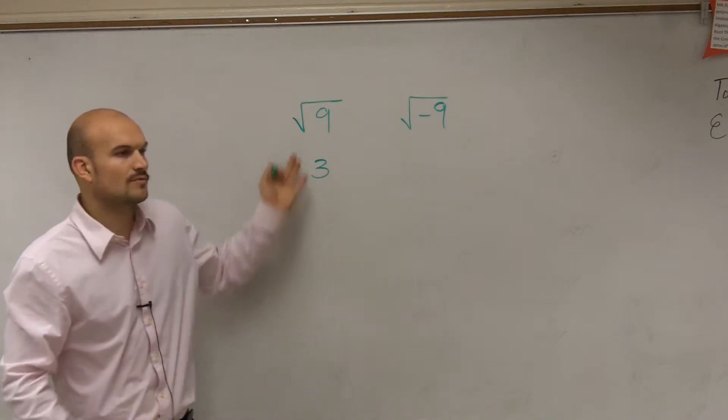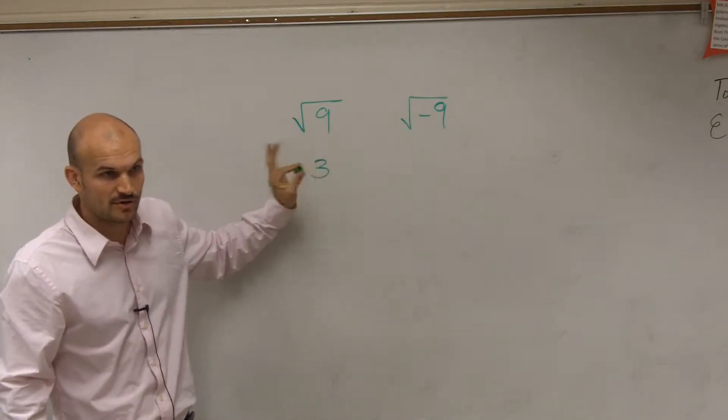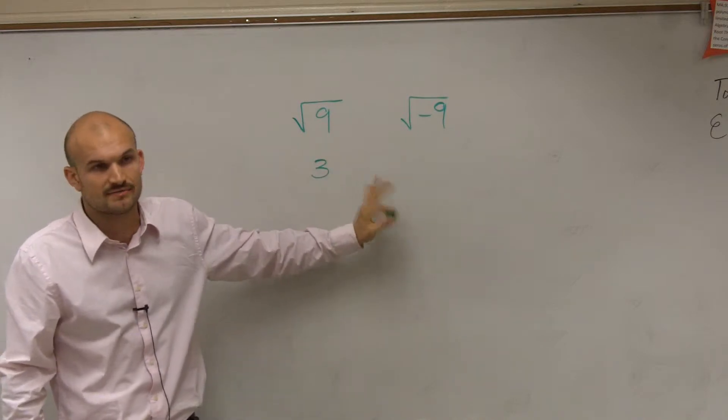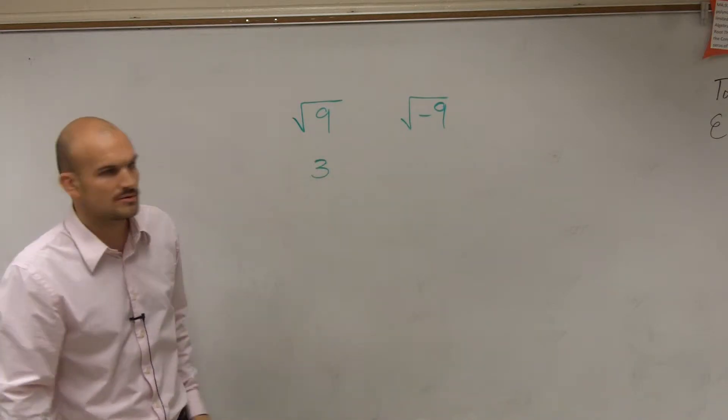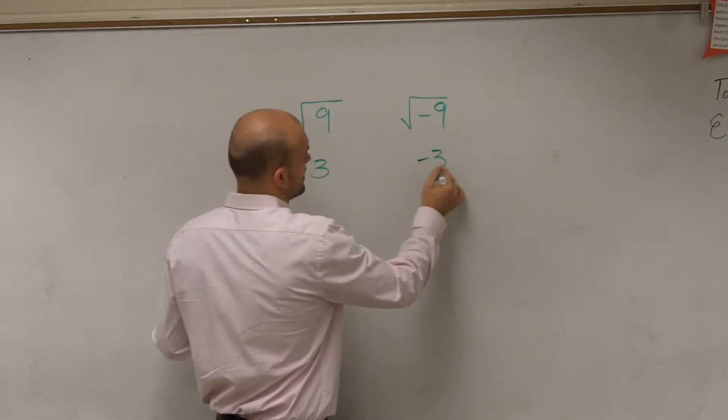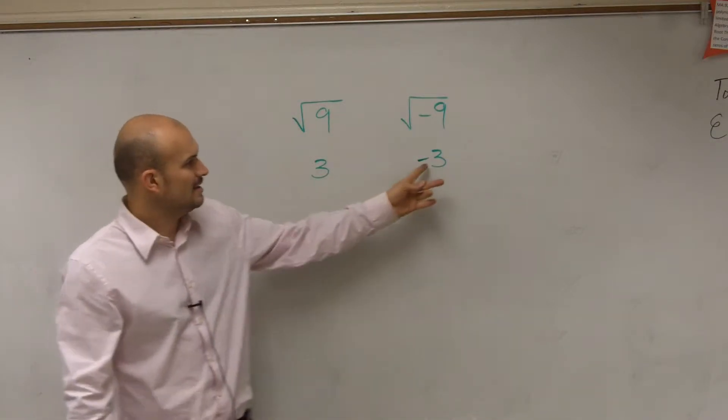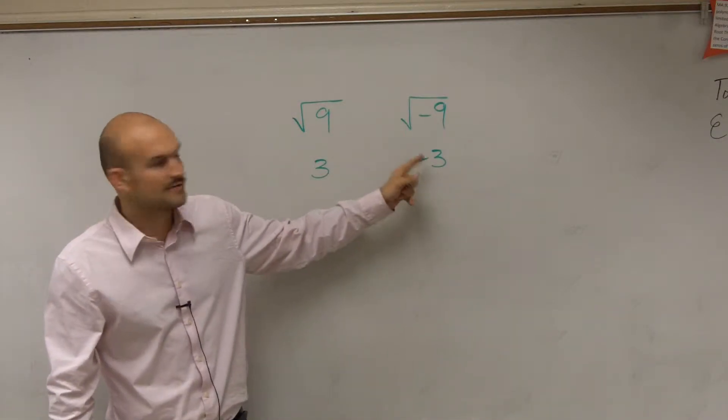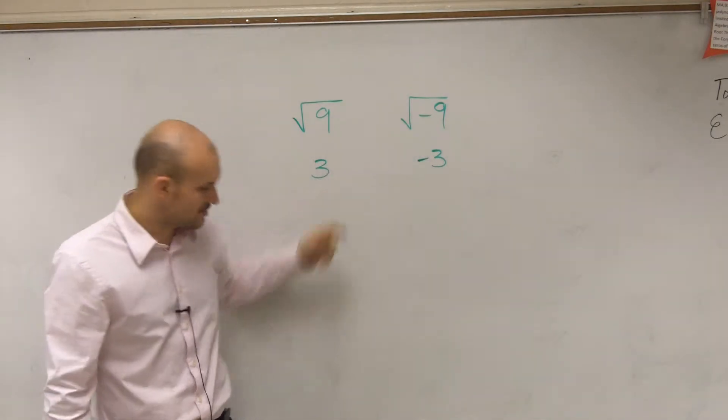Then they say, we're just dealing with the positive value when I have the square root already up here, I'm just going to assume the positive value. So they say, oh, well, that's 3, right? And that one has to be negative 3. But is negative 3 times negative 3 equal to negative 9? No. So that's incorrect.